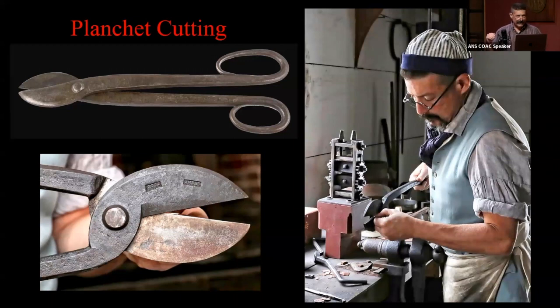You don't see burr edges on these pieces. So what I believe they were doing, they're getting them rough cut. They're close to the weight. Maybe they're 75 grains. Maybe they're 80 grains.